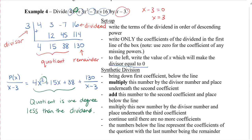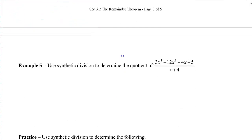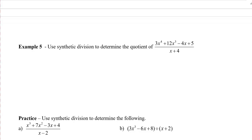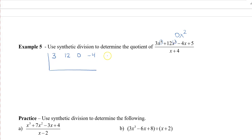Let's do one more example using synthetic division. Notice this time that the x squared term is missing. We have a power of 4 and power of 3, but we're missing power of 2, so we assume it has a coefficient of 0. The coefficients placed in the box are 3, 12, 0, negative 4, and 5. The divisor that makes x plus 4 equal to 0 is x equals negative 4, so we place negative 4 to the left of the box.